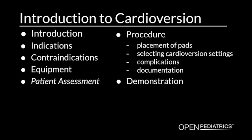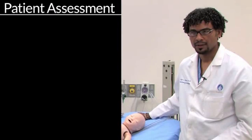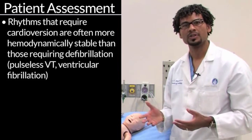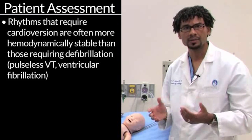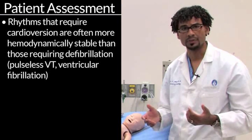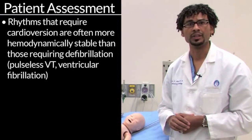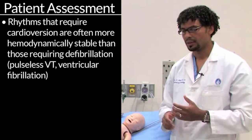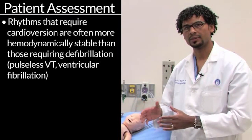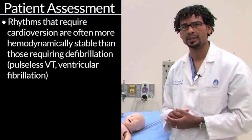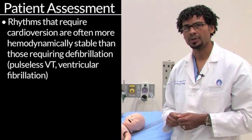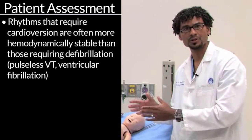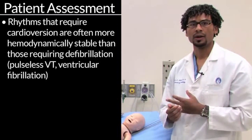Patient assessment. This is not always the case, but as a general rule, rhythms that we cardiovert tend to be relatively more hemodynamically stable than pulseless VT or ventricular fibrillation. And as a result of this, it actually makes a lot of sense to make sure that, in addition to getting your resources together to deliver a shock as early as is necessary, you pay attention to the evaluation of the patient to decide on where that shock occurs — whether it's in the emergency department, the ICU, and under what circumstances.